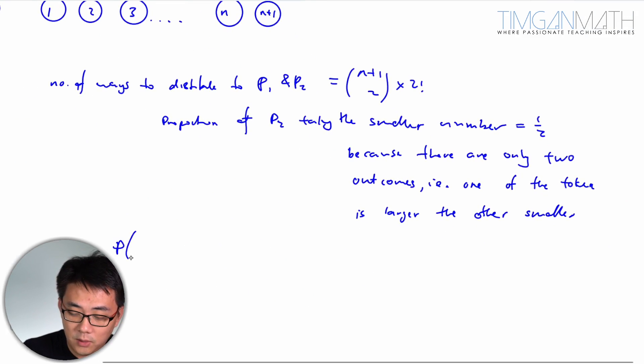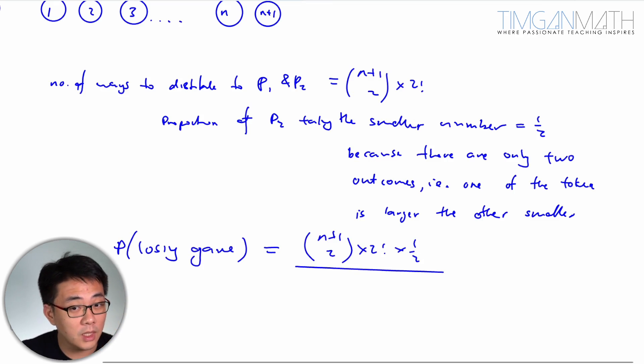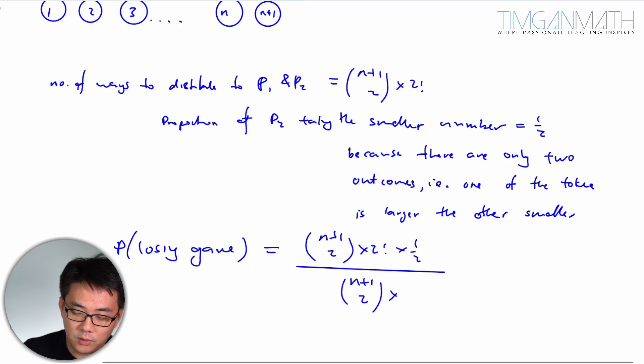So the probability of P2 losing the game would just be N plus 1 choose 2 times 2, times half, because half of the time he will take the smaller number, divided by N plus 1 choose 2 times 2 factorial. So this would just be half.